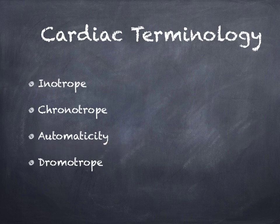The last term is dromotrope, which refers to the speed of conduction — the velocity at which an impulse is conducted through the heart. A positive dromotrope enhances conductivity, whereas a negative dromotrope decreases the speed of conduction. There are cases where we'd want to increase or decrease conduction speed. That covers our basic terminology.